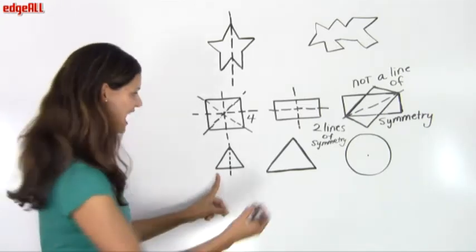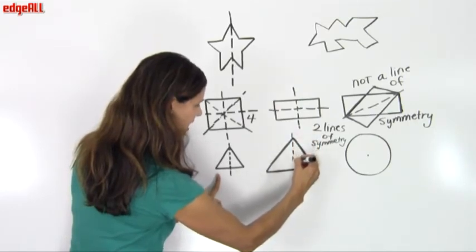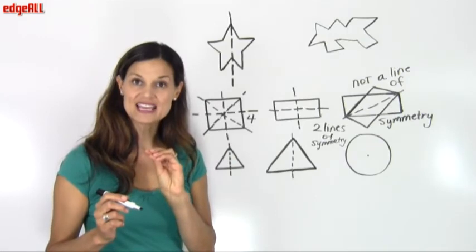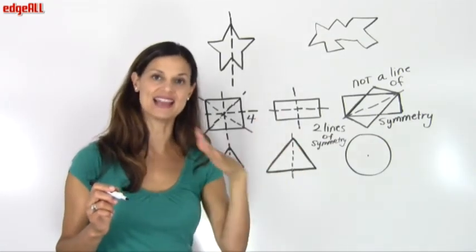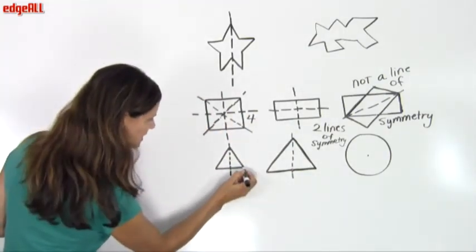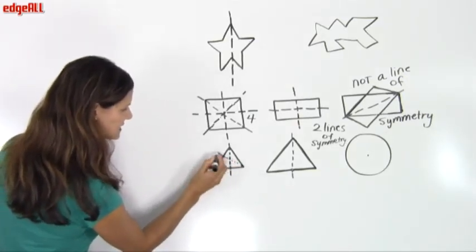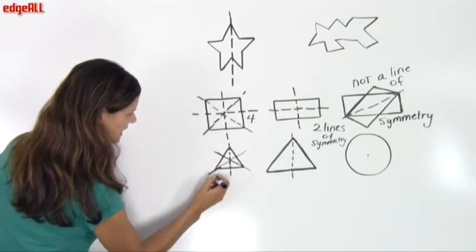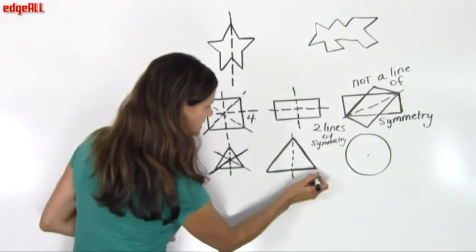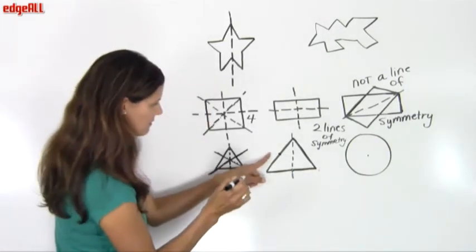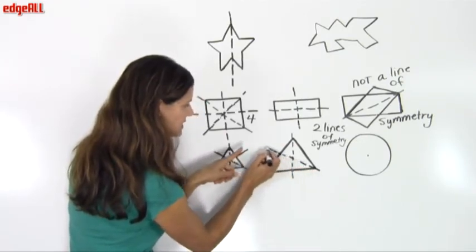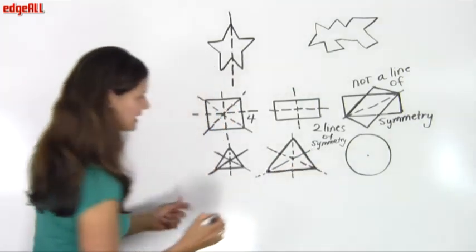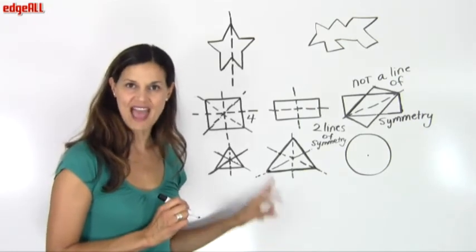That's not the only one — I can do that with all three angles connecting to the opposite side. Drawing a line from one angle to the middle of the opposite side gives me a line of symmetry. Similarly, from the second angle to the middle of its opposite side gives me another, and from the third angle to the middle of its opposite side gives me a third. So equilateral triangles have three lines of symmetry, and they are symmetrical shapes.